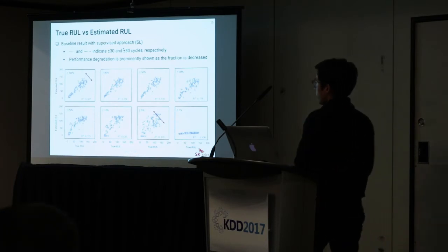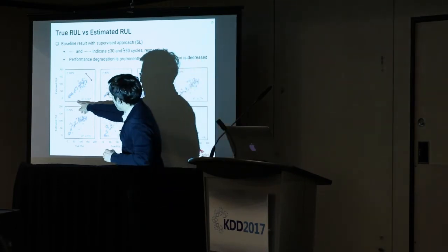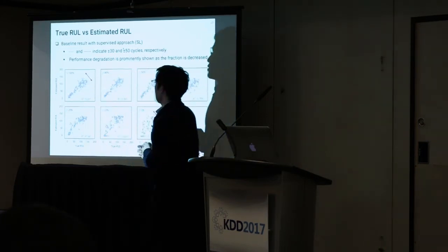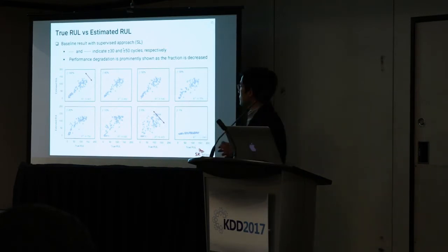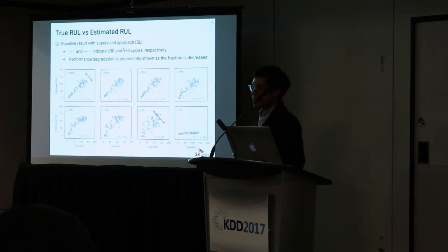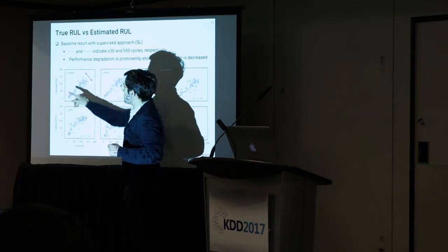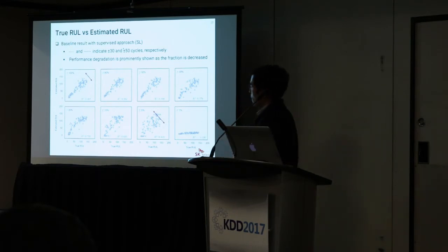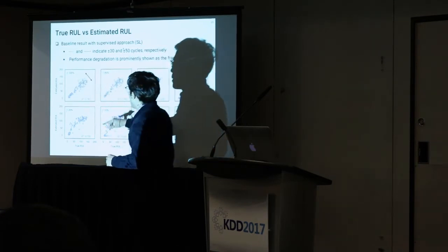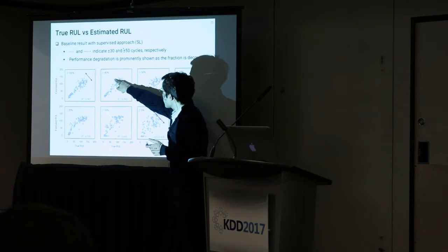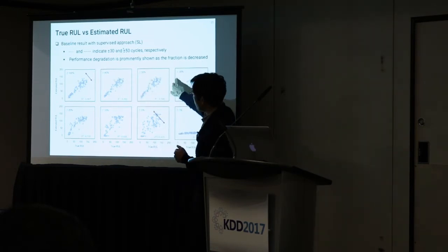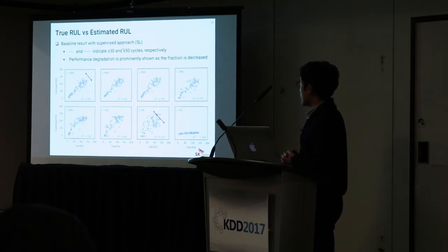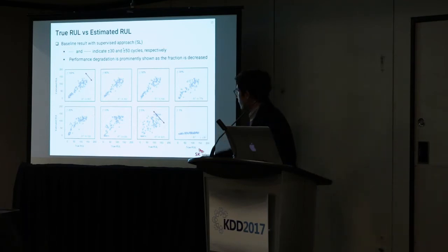In the baseline result plot, the x-axis is the true RUL of a given unit and the y-axis is the estimated RUL. The blue and red dotted lines indicate plus/minus 30 and 50 cycles respectively as guidance. Using the entire training sample with failure records, predictions fall largely within the 30-cycle envelope. But as we omit failure records — at 50%, 30%, 20%, down to 1% — performance degrades prominently as seen in the plots.